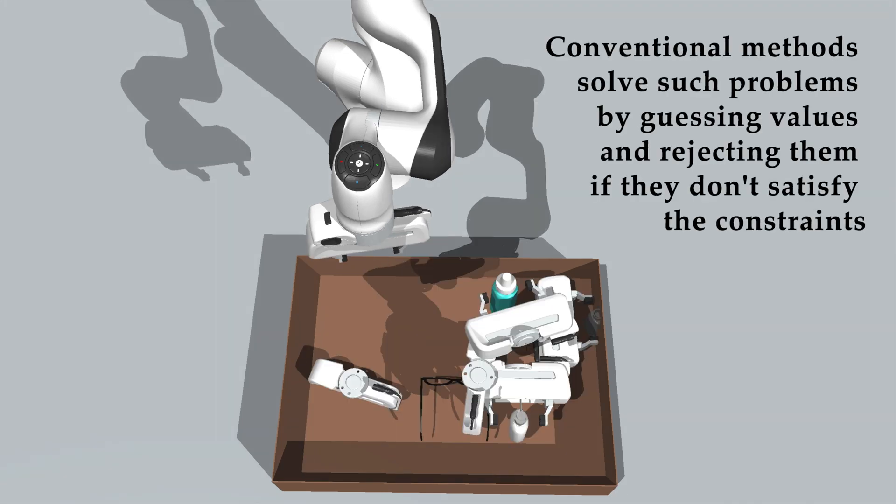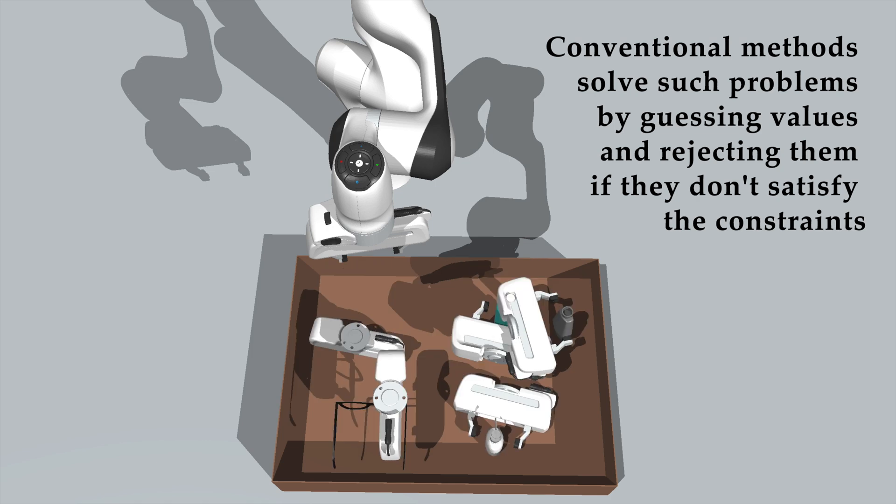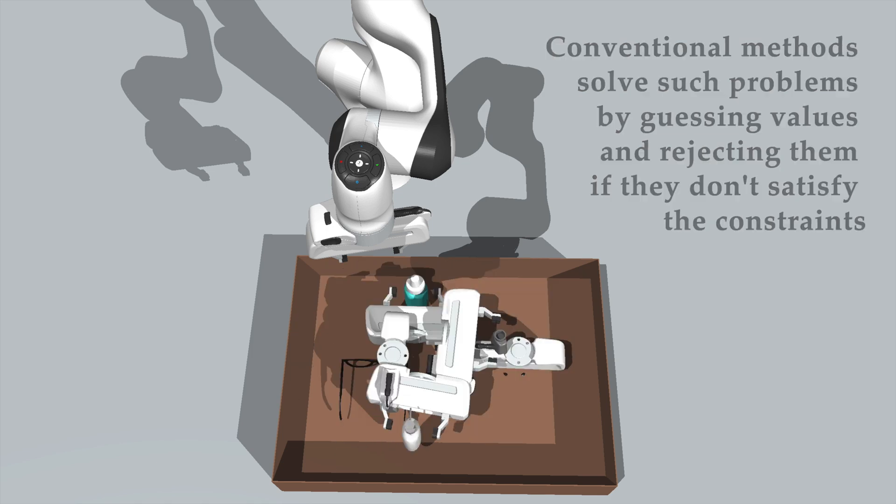Conventional methods solve such problems by guessing values and rejecting them if they don't satisfy the constraints.